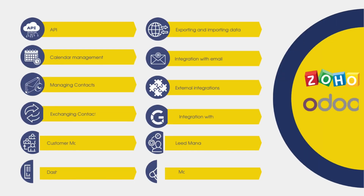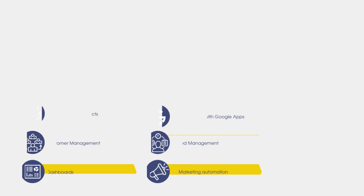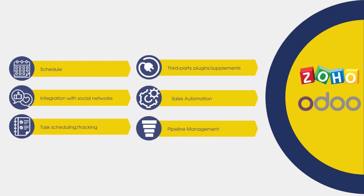For a more detailed comparison, let's look at the features both Zoho and Odoo provide. Both CRM systems offer APIs, calendar management, contact management, contact exchange, customer management, dashboards, exporting and importing data, email integration, external integrations, Google Apps integration, lead management, marketing automation, social network integration, scheduling, task scheduling and tracking, third-party plugins and add-ons, and sales automation and pipeline management.